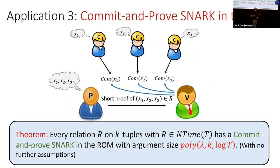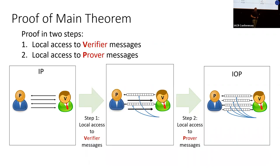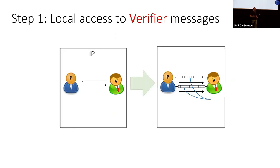Let's get back to our main theorem. We want to go from an IP all the way to an IOP, and we'll do this in two steps. The first step: get local access to the verifier messages, while still being allowed to read the prover messages in full. The second step: encode the prover messages as well, yielding a full IOP.